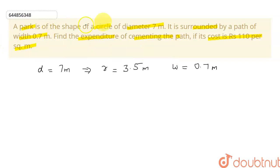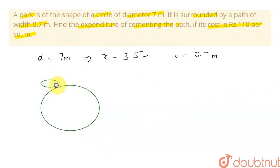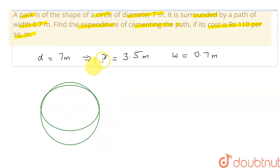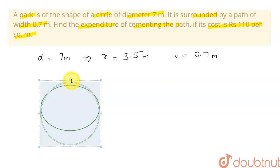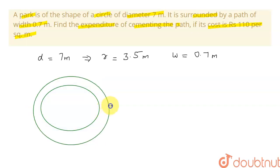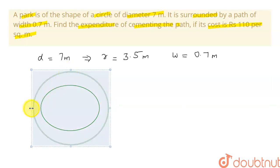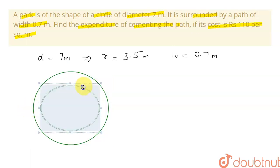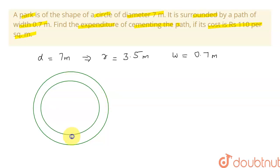Let me draw a rough sketch of this question. We have our park, which is a circle, surrounded by a road. The road is also a circular path forming a ring around the park.